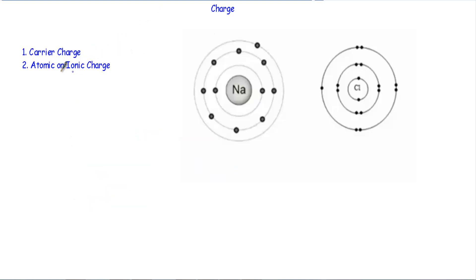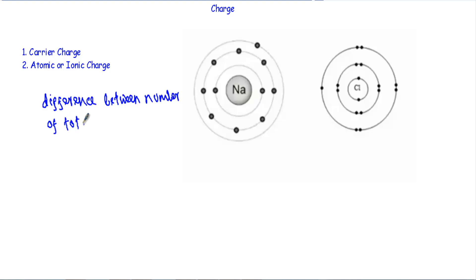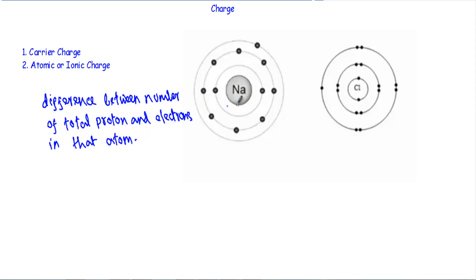The second type is ionic or atomic charge. In an atom, ionic or atomic charges are created when there is a difference between the total number of protons and electrons in that atom.